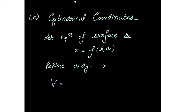For cylindrical coordinates, if the equation of the surface is z equal to f of r phi, then just replace dx dy with r dr d phi. So the volume becomes the double integral over R of z times r dr d phi.